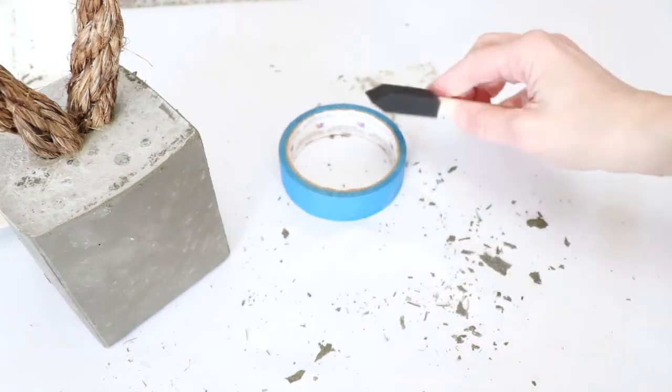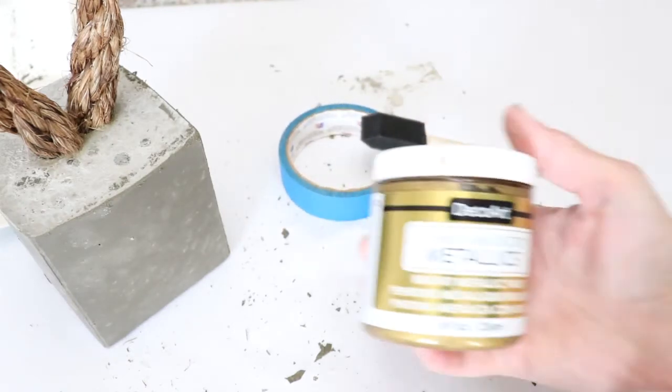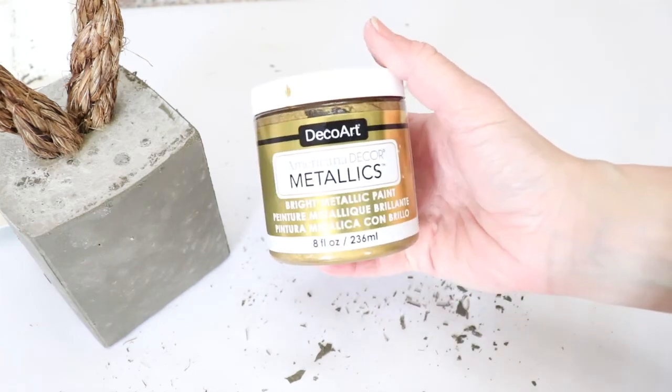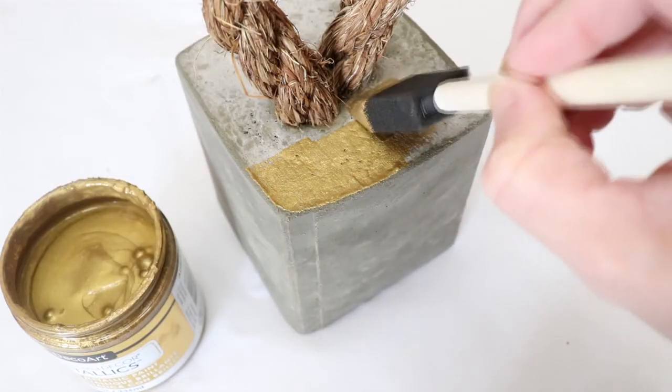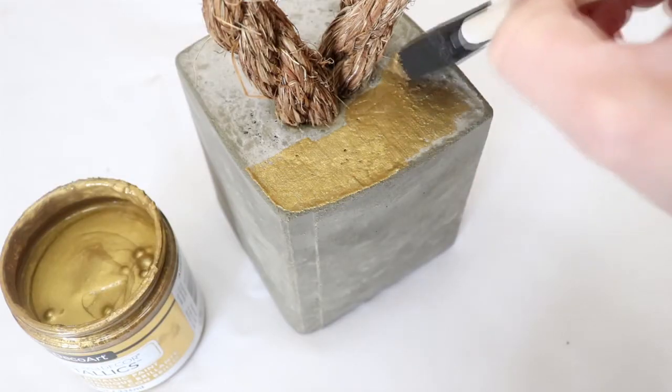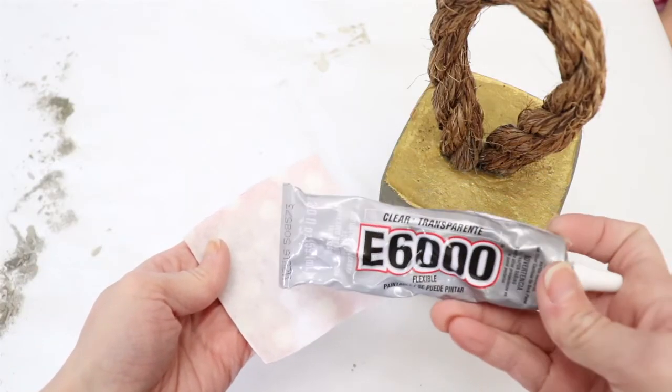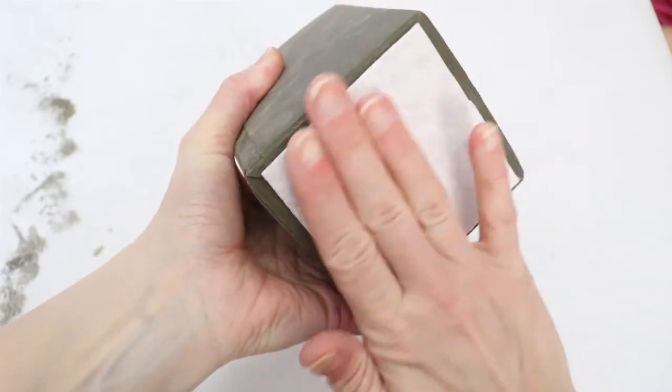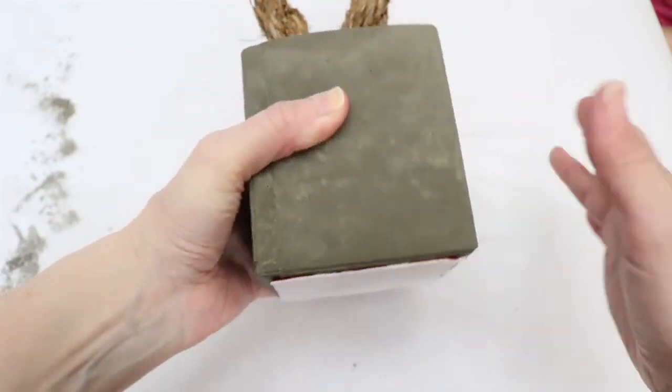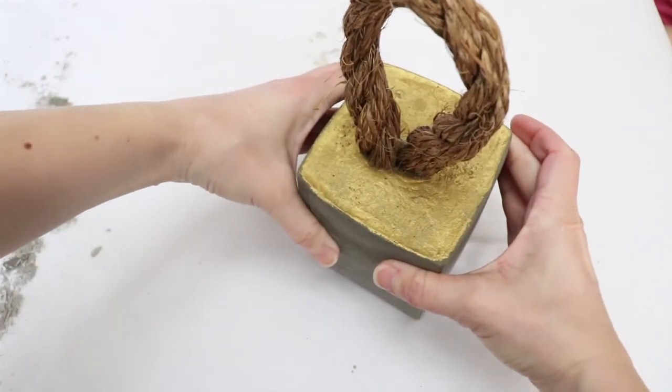Once it's sanded, you can grab some tape and add a little decoration with some nice gold paint like I did with this one. Once you're done with your decoration, your concrete will dry fully within another 24 to 48 hours. Since you're using this as a door stop, be sure to add a piece of felt to the bottom to protect your floors.